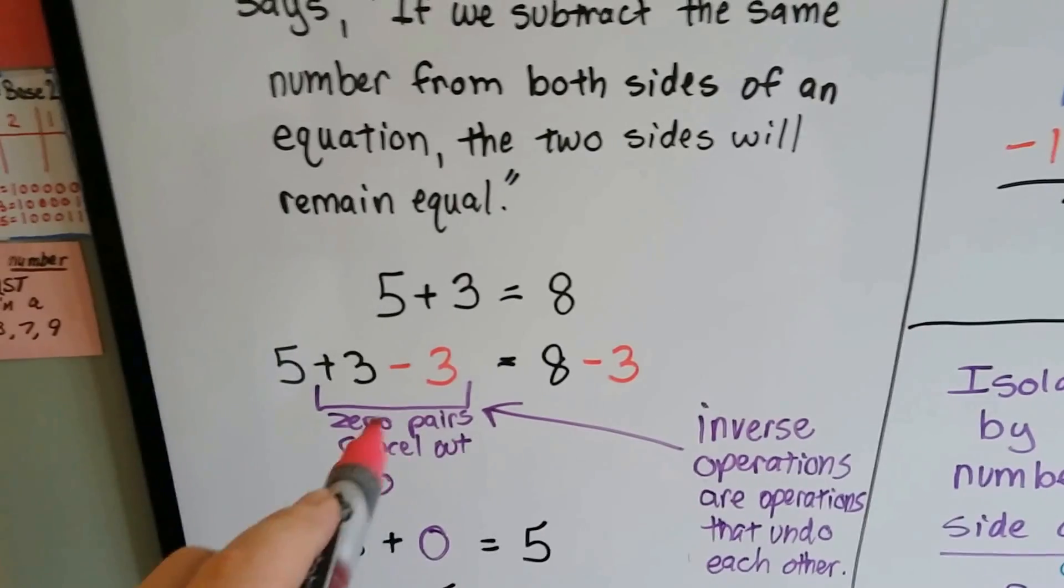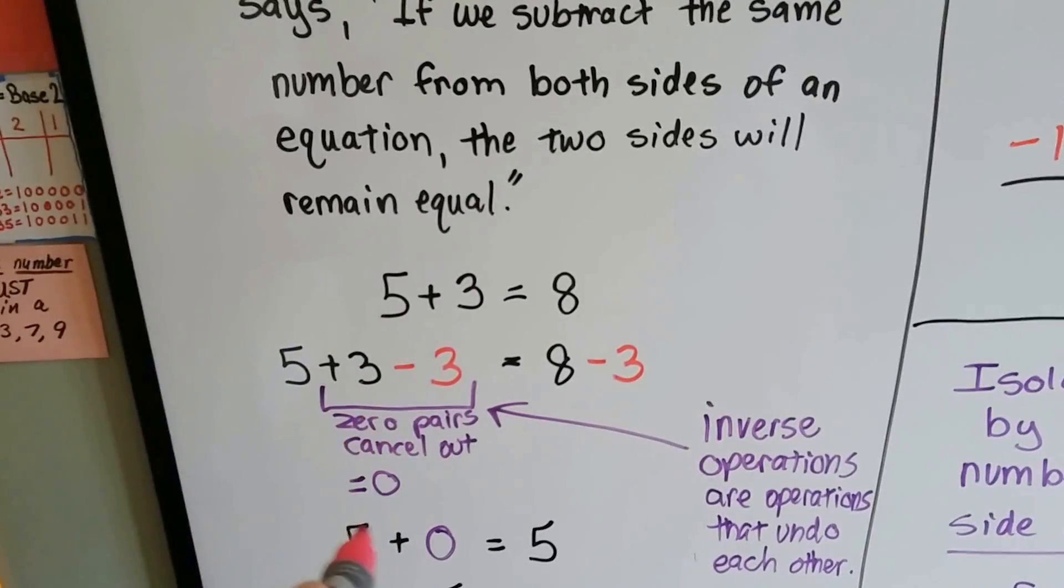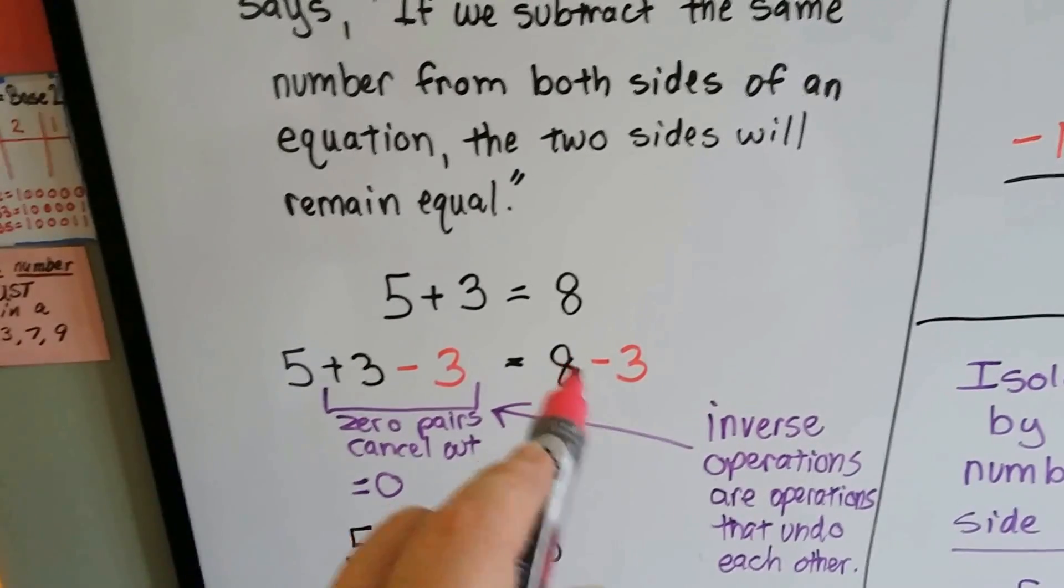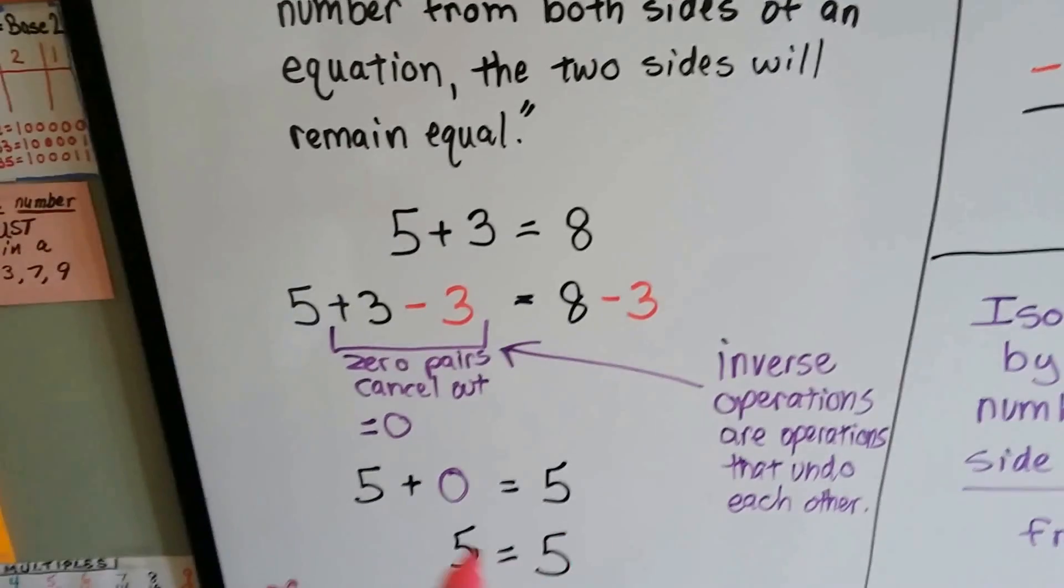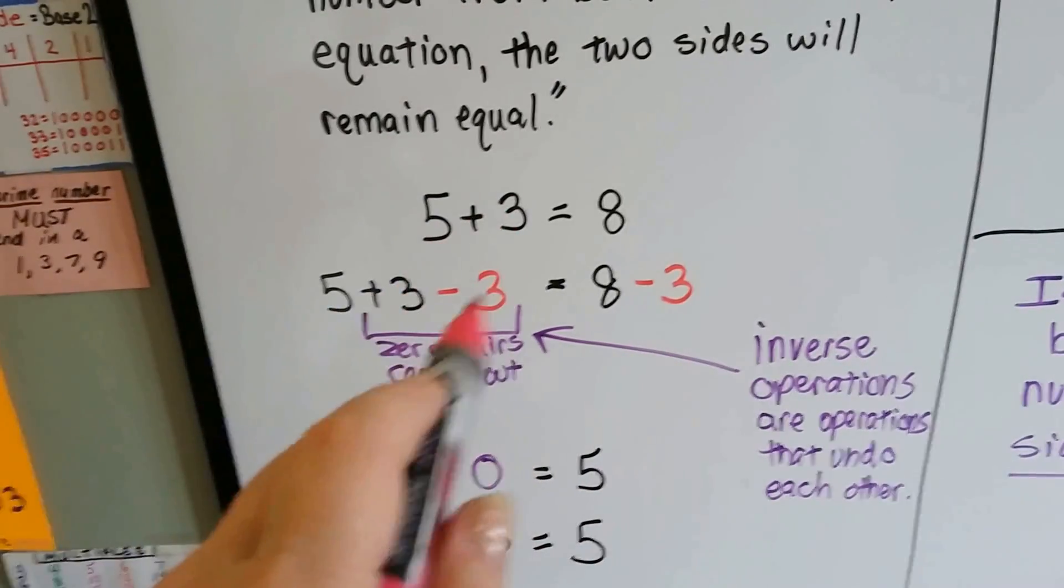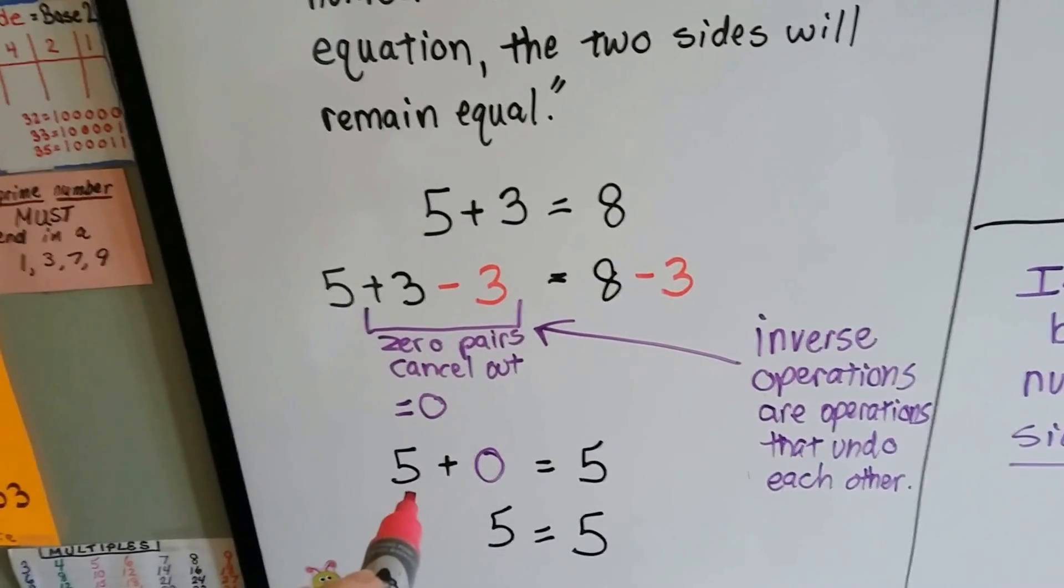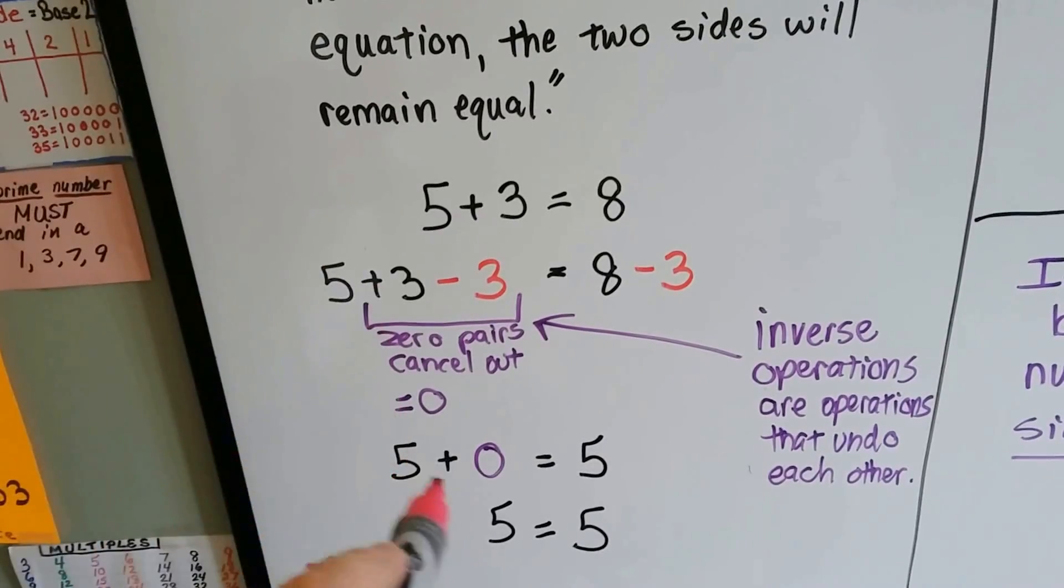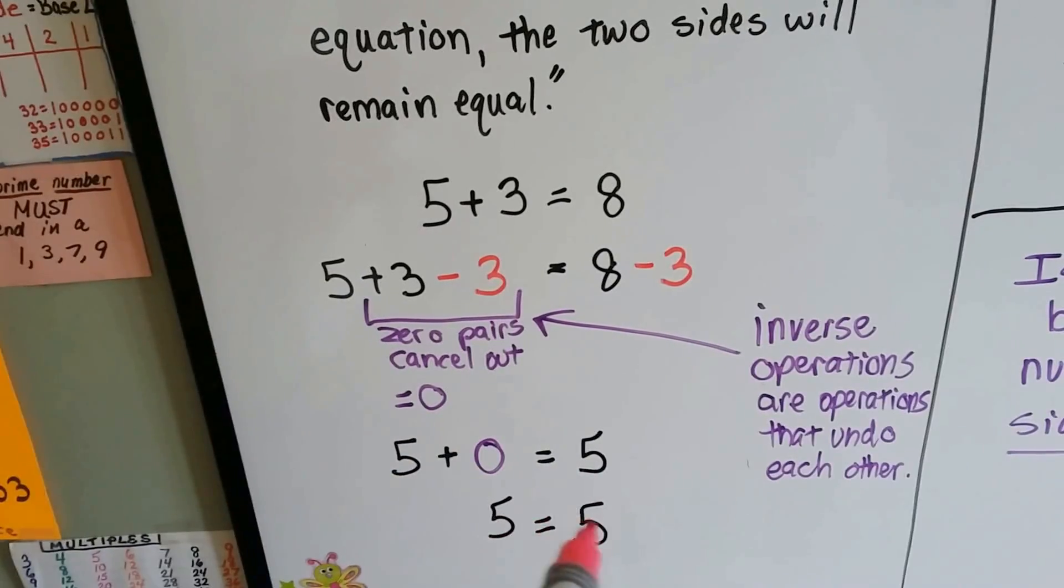these two, the plus 3 and the minus 3, cancel out because they're 0 pairs, and they become a 0. 8 minus 3 becomes a 5. We have now isolated it off to one side. That's if there was a variable here. And then we'd have 5 plus 0, which is 5 equals 5.